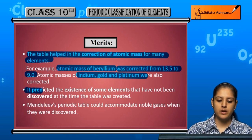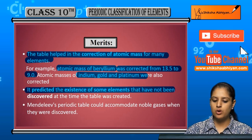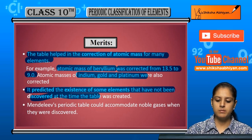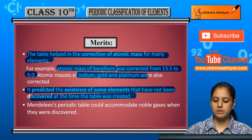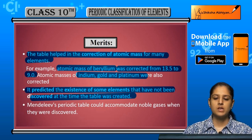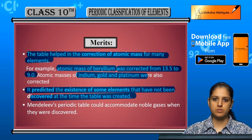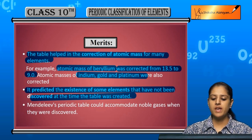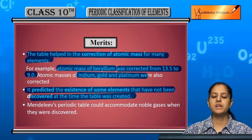It predicted the existence of some elements that had not been discovered at the time the table was created. Because it kept some gaps, the existence of these unknown elements could be predicted from those gaps.